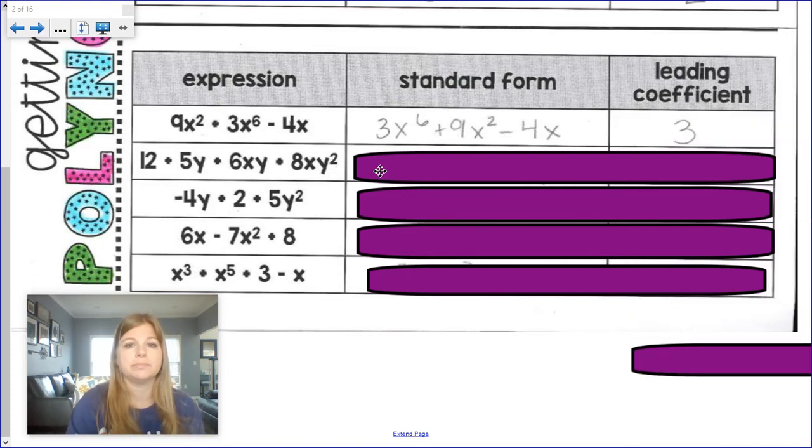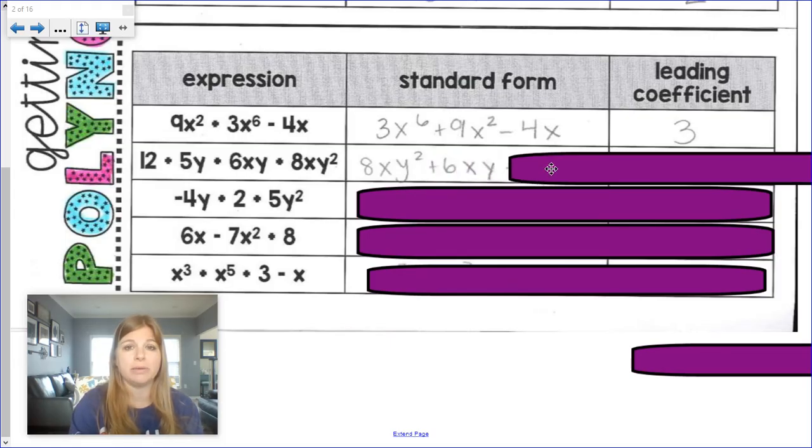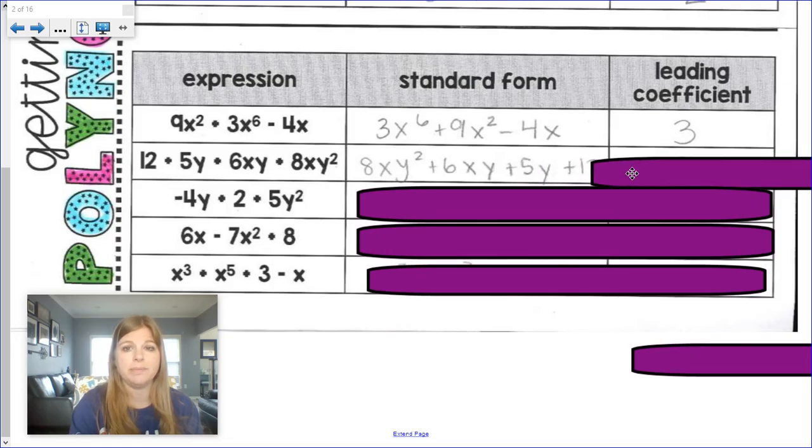Next one. Can you tell which one has the highest degree? If you said 8xy squared, you're correct. It has a degree of 3. Then 6xy, which has a degree of 2. Then 5y, that has a degree of 1. And then 12, that has a degree of 0. Leading coefficient? 8.